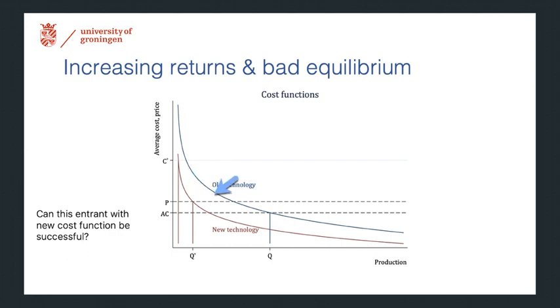In other words, it would be socially optimal for this market to switch in its entirety to the new technology and a new provider. However, if this new provider hasn't produced yet, it will have a much higher cost than the old producer at its large scale.